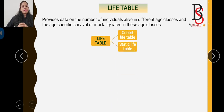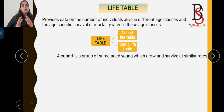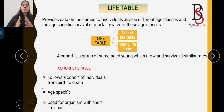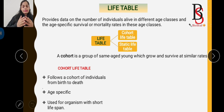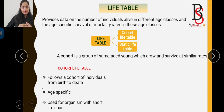A cohort refers to a group of individuals of the same age group. The cohort life table tracks individuals from birth to death — it is used to determine life expectancy and survival of individuals starting from birth through death. It is age-specific, and is used for organisms that have a very short lifespan.